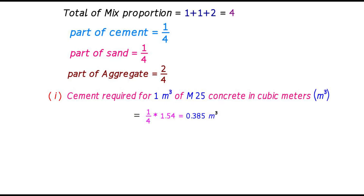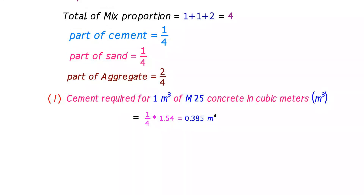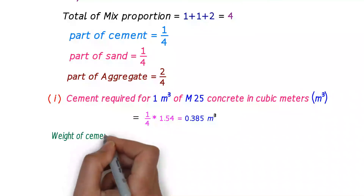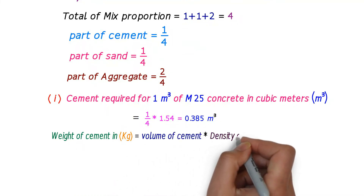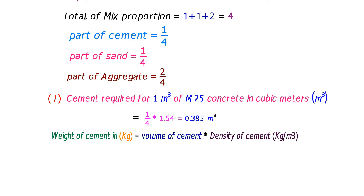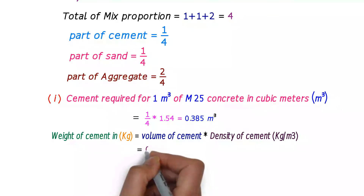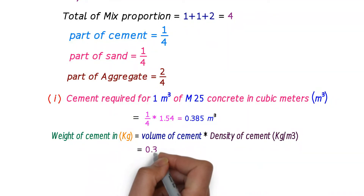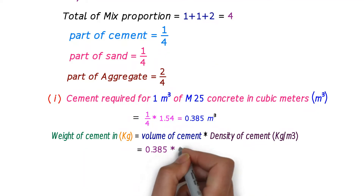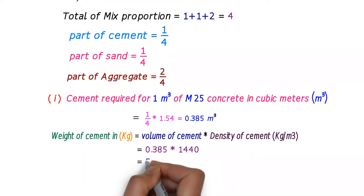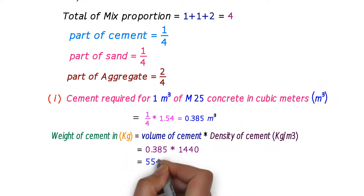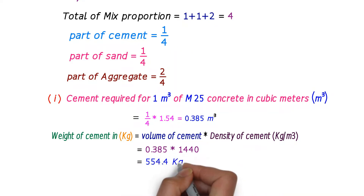We are converting the volume of concrete into weight by multiplying its density. The weight of cement in kilograms is equal to volume of cement multiplied by density of cement. The volume of cement is 0.385 and the density of cement is 1440 kg per meter cube. Therefore, the weight of cement is 554.4 kg.